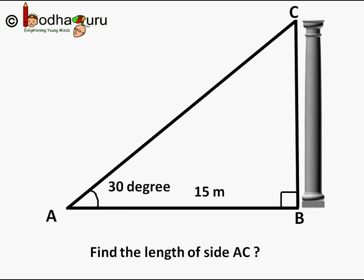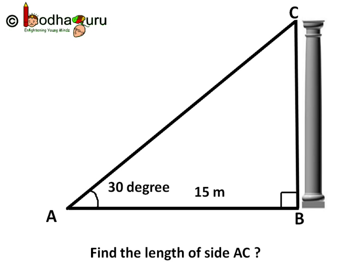Let us continue with the same example. We are making a ramp from point on the ground A to the tip of the pillar C. Say the ramp angle is 30 degrees and the distance from the start of the ramp point A to the base of the pillar B is 15 meters. And we need to find the measure of the ramp, that is side AC. So how do you do that?